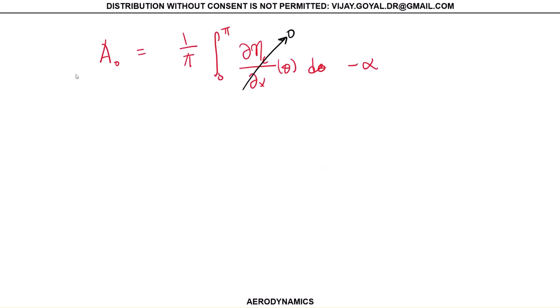And a_n will give you 2/π integral from 0 to π of ∂η_c/∂x of θ cosine of nθ dθ. Since this is equal to zero, you find that this is also zero. So in this problem, a_1 equals a_2 equals zero.